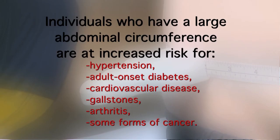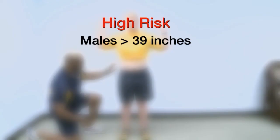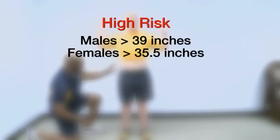Individuals who have a large abdominal circumference are at increased risk for hypertension, adult onset diabetes, cardiovascular disease, gallstones, arthritis, and some forms of cancer. Males with a waist circumference greater than 39 inches and females with a waist circumference greater than 35 and a half inches are at high risk.